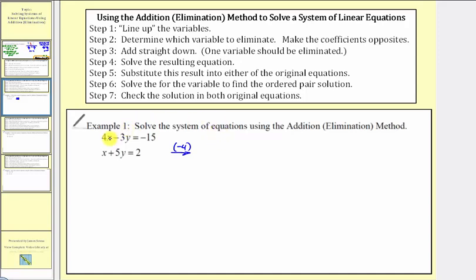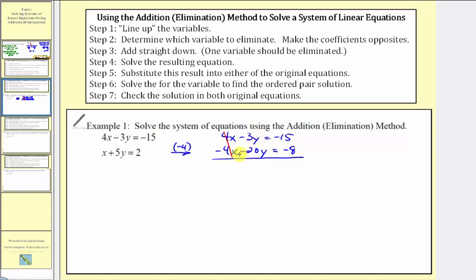So we'll keep the first equation the same, since we're going to eliminate x: four x minus three y equals negative fifteen. For the second equation, multiplying by negative four, we get negative four x minus twenty y equals negative eight. Don't forget we're multiplying both sides of the equation by negative four. Step three, we add straight down — one variable should be eliminated. Because the x terms are opposites, their sum is zero. Here we have negative three y plus negative twenty y, that's negative twenty-three y, equals negative fifteen plus negative eight, which equals negative twenty-three.